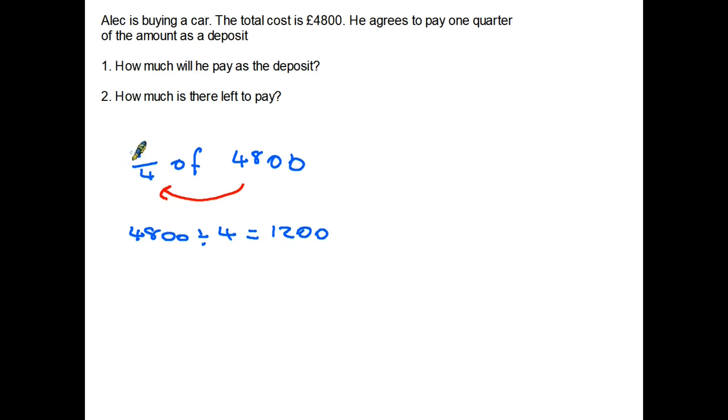Step two, multiply it by the top. It's a one, so £1,200 will be the deposit. Now again, how much is there left to pay? Well, one way we can do this is 4,800 minus the deposit of 1,200 pounds. That must mean that there is £3,600 left to pay.